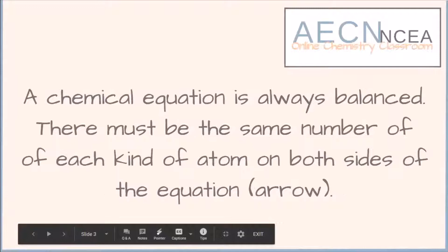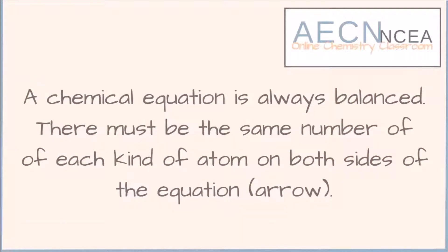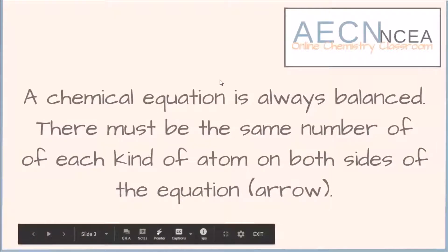A chemical equation is always balanced. There must be the same number of each kind of atom on both sides of your arrow. So for example, if there are two magnesium atoms on the left there has to be two magnesium atoms on the right side of the arrow.